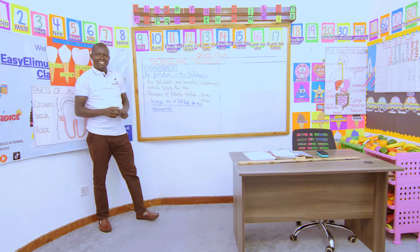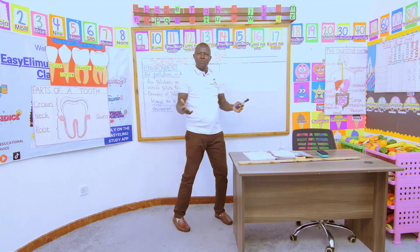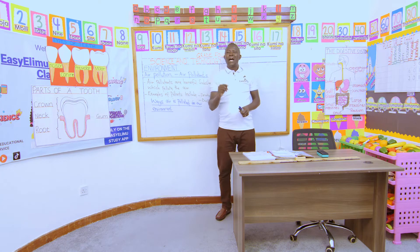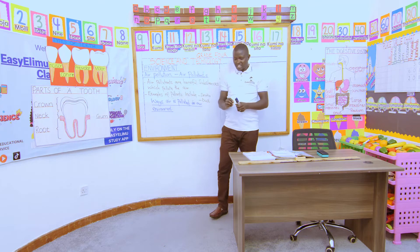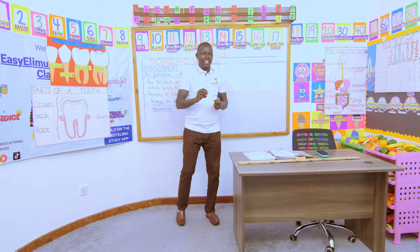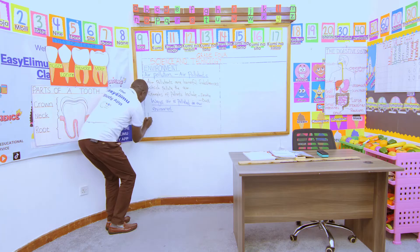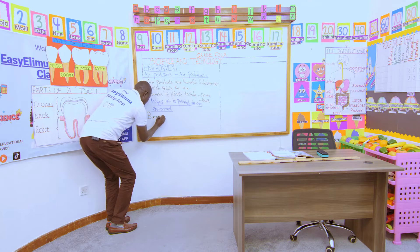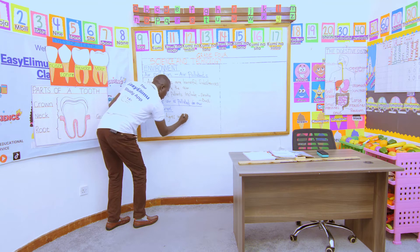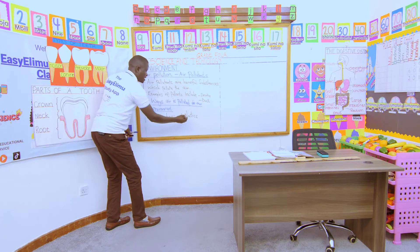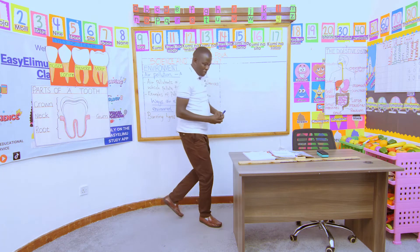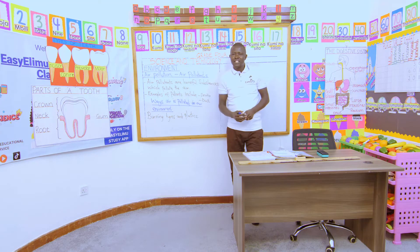You discussed and said one way the air is polluted is when people burn tires and plastics. When people burn tires and plastics, the gas that is produced is polluting the air. That is one good example of how air is being polluted in the environment.